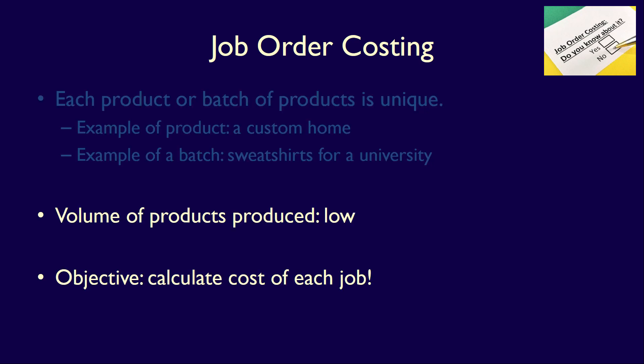In a job order costing system, the volume of products produced is low, sometimes only one. The objective of the job order costing system is to identify the costs related to that particular job and calculate the total cost of the job. Therefore, costs are accumulated per job. If the job is actually a batch, then the per unit cost is calculated as the total job cost divided by the total units produced.